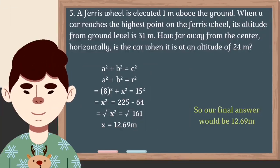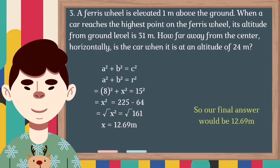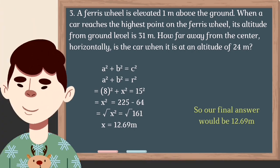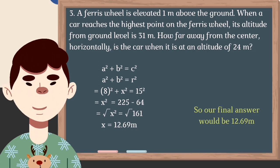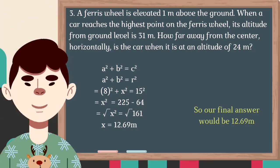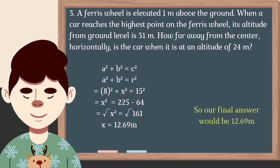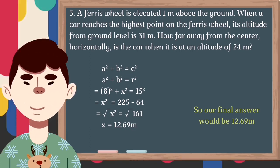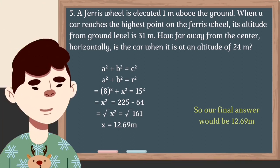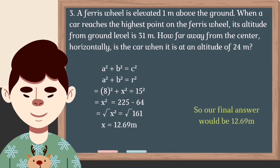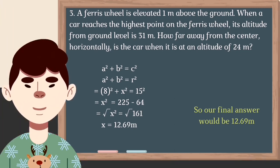Lastly, to find our final answer, let us use the Pythagorean theorem: A² + B² = C², substituted as x² + y² = R². Now solve: substituting our values, x² = R² - y², so x² = 225 - 64 = 161. Let us put a square root on both sides to cancel the exponent for x: x = √161. So our final answer is x ≈ 12.69 meters.